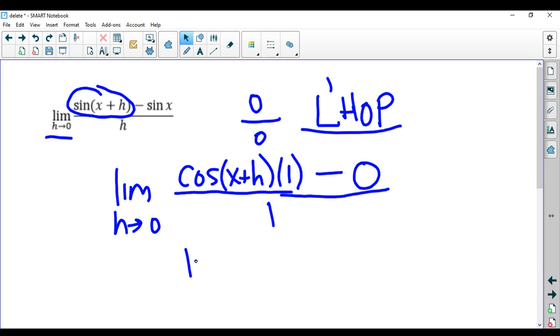So this comes down to the limit as h goes to zero of just the cosine of x plus h. So now to evaluate this limit, you plug in zero for h, because that's how we do limits.